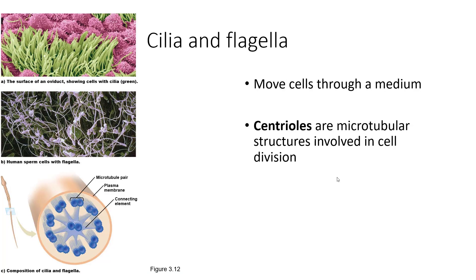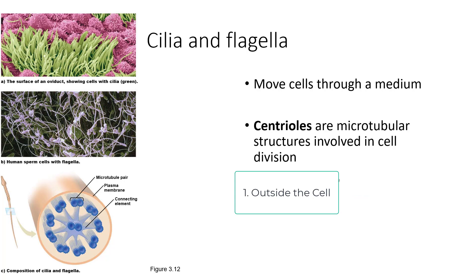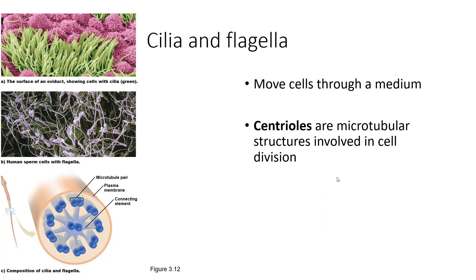Outside the cell, we have cilia and flagella, which move cells through their medium. Not all cells have cilia and flagella — cells in your lungs have cilia to move mucus around, and a sperm cell has a flagellum to move through the medium. These are similar in structure to centrioles, which are found inside the cell as microtubular structures involved in cell division, which we will cover later in mitosis.